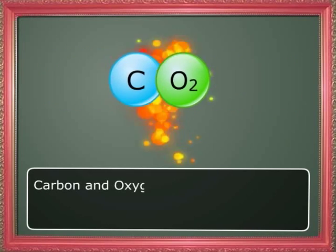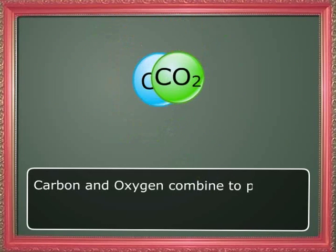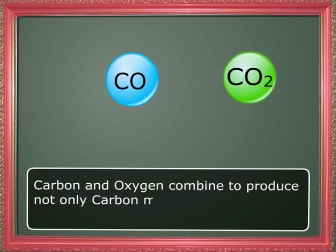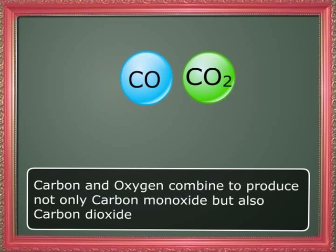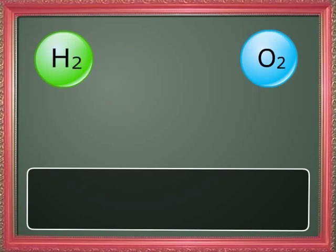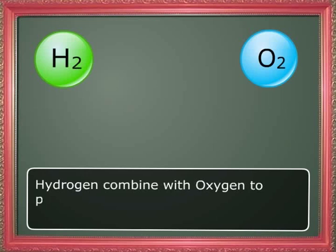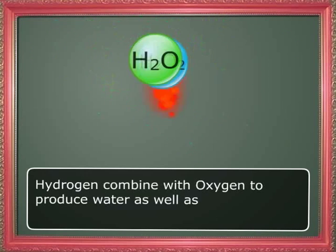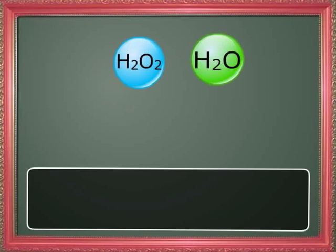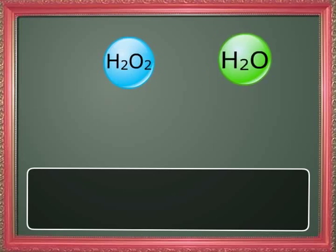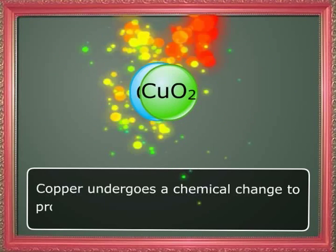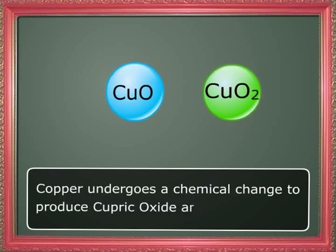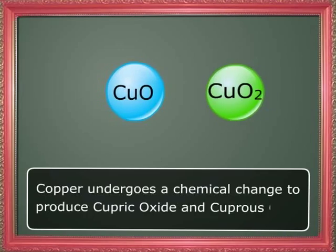Carbon and oxygen combine to produce not only carbon monoxide but also carbon dioxide. Hydrogen combines with oxygen to produce water as well as hydrogen peroxide. Copper undergoes a chemical change to produce cupric oxide and cuprous oxide.